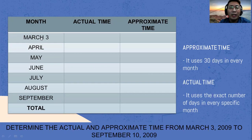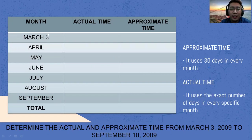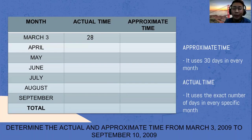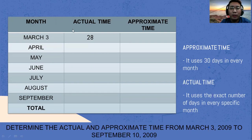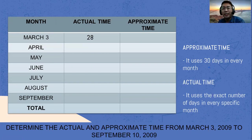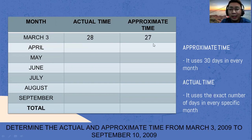Since we will be starting on March 3, we will be subtracting 3 from 31 for actual time because March has 31 days — that gives us 28. For approximate time, we always use 30 days, so 30 minus 3 gives us 27 days.